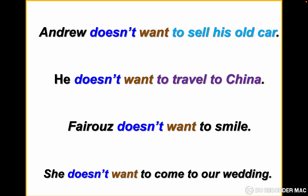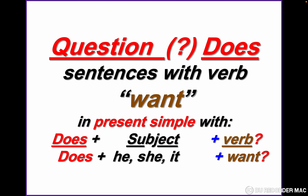More examples: Andrew doesn't want to steal his old car. He doesn't want to travel to China. Fairuz doesn't want to smile. She doesn't want to come to our wedding. We notice that with Andrew, he, Fairuz, and she, the verb is without 's' because it's with 'doesn't'. Let's repeat: Andrew doesn't want to steal his old car. He doesn't want to travel to China. Fairuz doesn't want to smile. She doesn't want to come to our wedding.